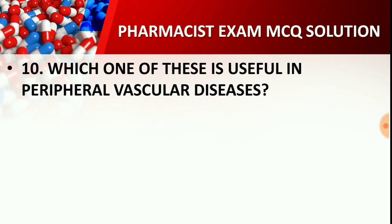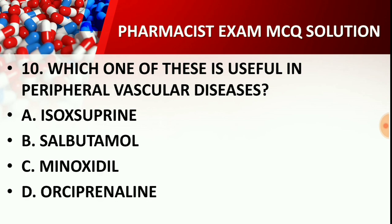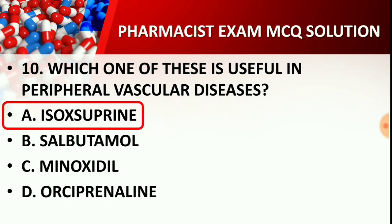Question number 10: Which one of the following is useful in peripheral vascular disease (PVD)? Options: Isoxuprine, Salbutamol, Minoxidil, or Orciprenaline. The correct answer is Option A — Isoxuprine. Isoxuprine is the drug mainly used in peripheral vascular disease.